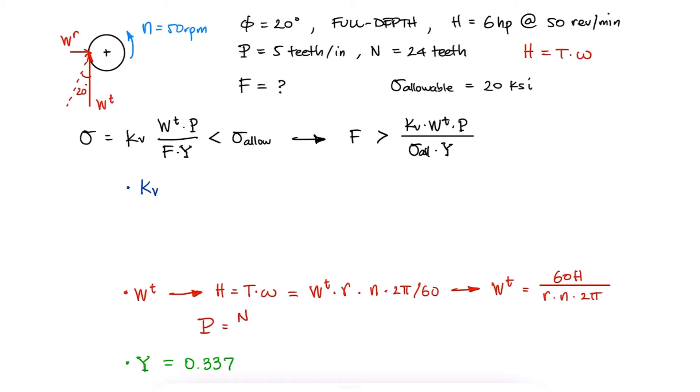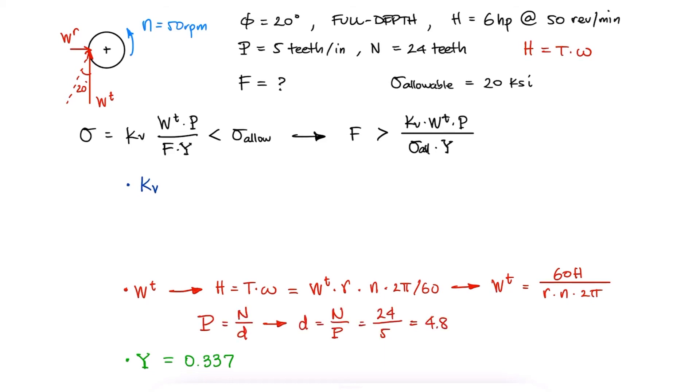With a diametral pitch of 5 teeth per inch and 24 teeth, we find the diameter of the gear, and with it, the radius, which allows us to calculate the tangential component of the force.